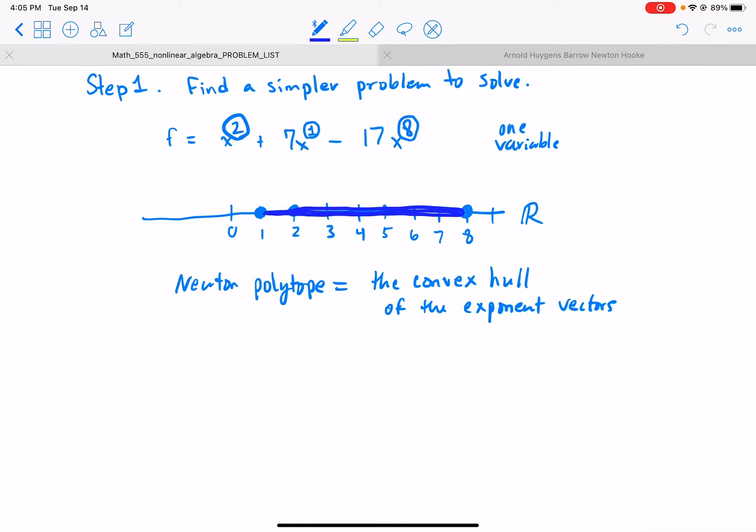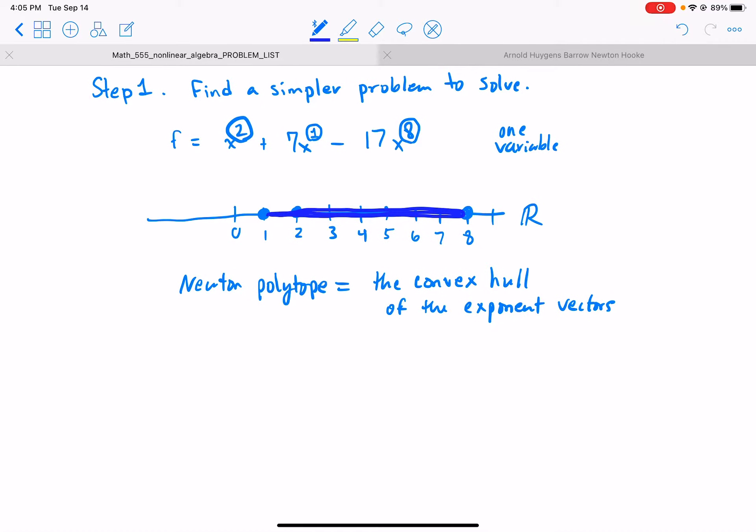Now let's do... okay, I said find a simpler problem to solve, but I hadn't even told you what a Newton polytope is. So I don't expect that you would do this. I guess really what I mean is when I'm trying to explain something, I should find a simpler thing to explain first. So now let's step up a level and put f in two variables.